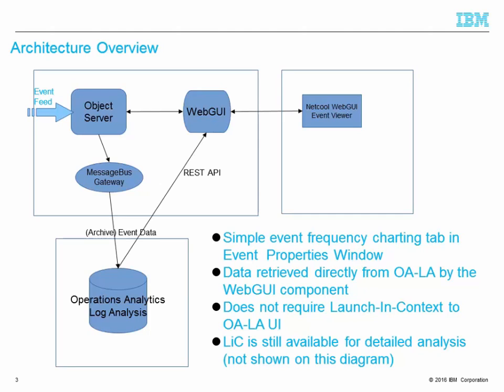When the user clicks on a chart, the event viewer requests the chart data via a web GUI serverlet, which then sends a request on to LA. It uses an internal REST API between the event viewer and web GUI, and uses LA's external REST API to communicate with the LA server. Data is retrieved directly from LA via the web GUI component — it doesn't require a launching context in the browser, so it doesn't require a launching context to LA's user interface.